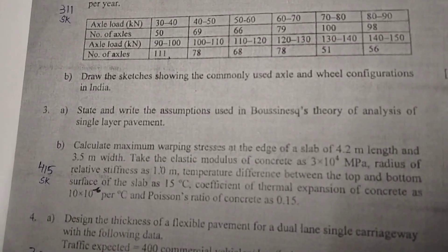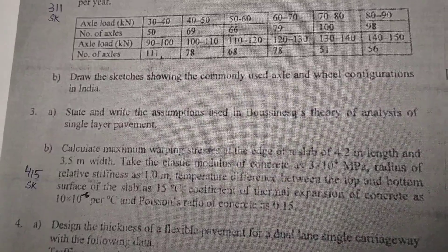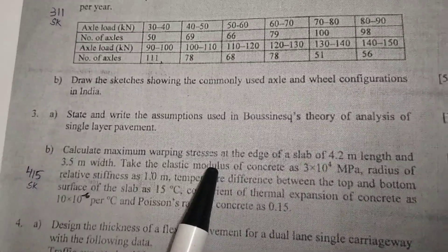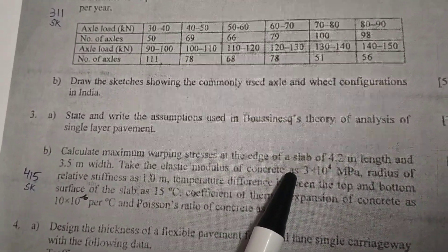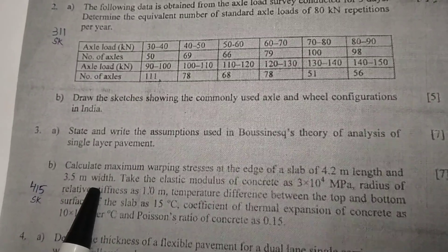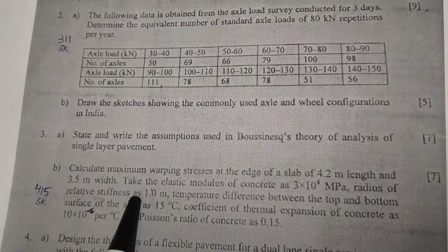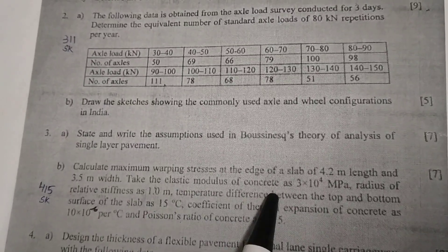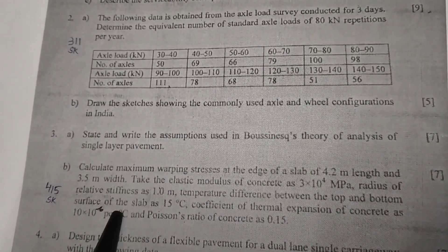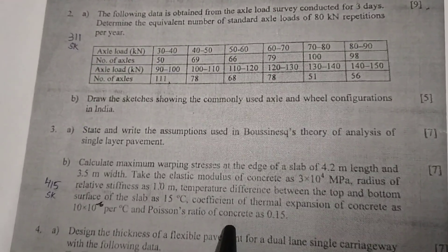Now we will solve a problem regarding warping stresses. The problem asks us to calculate the maximum warping stresses at the edge of a slab of given length and width. The data provided includes: elastic modulus of concrete, radius of relative stiffness, temperature difference between top and bottom surfaces, coefficient of thermal expansion, and Poisson's ratio. Let's solve this problem.